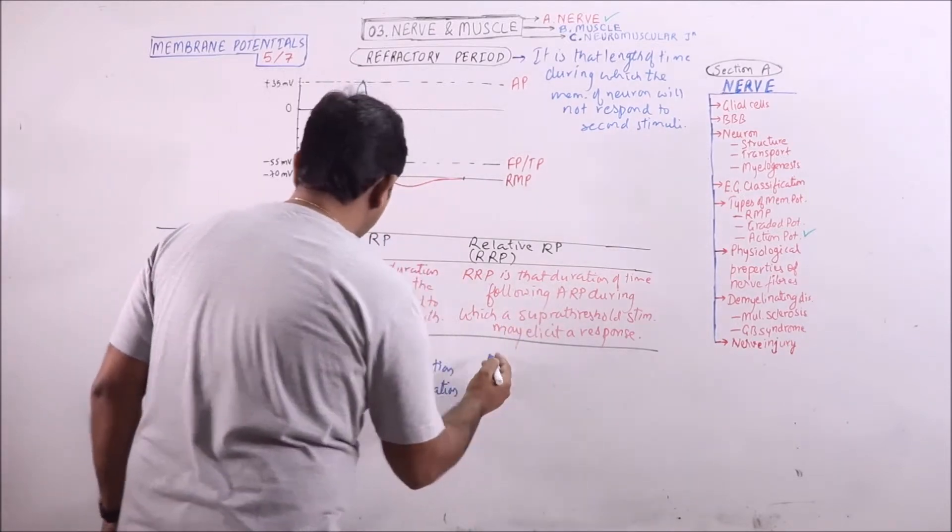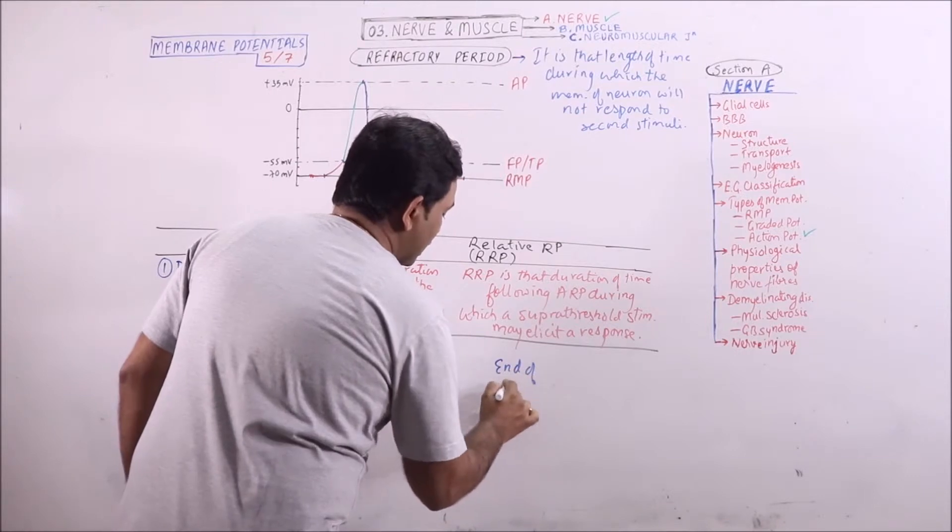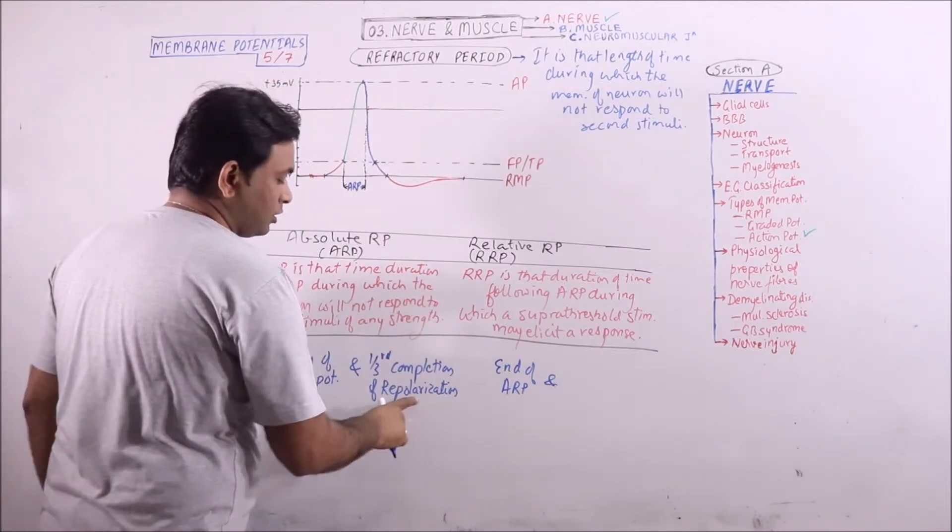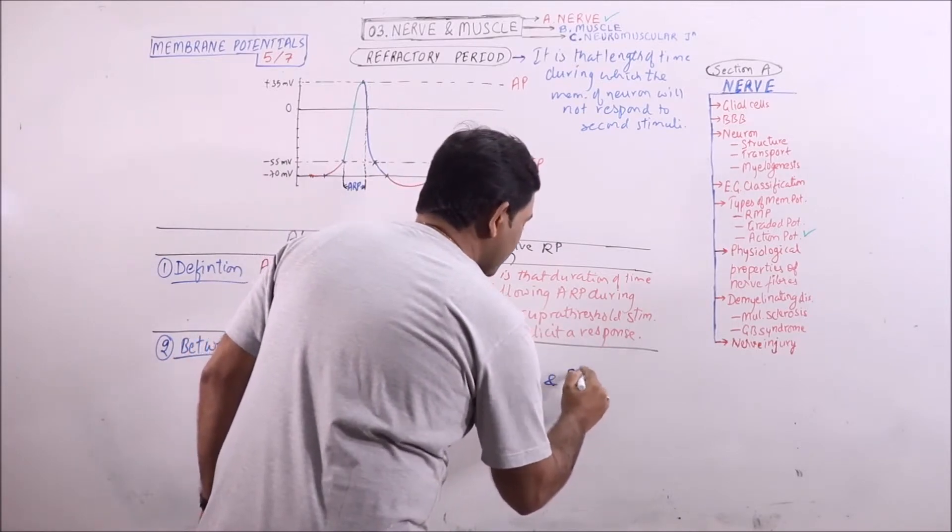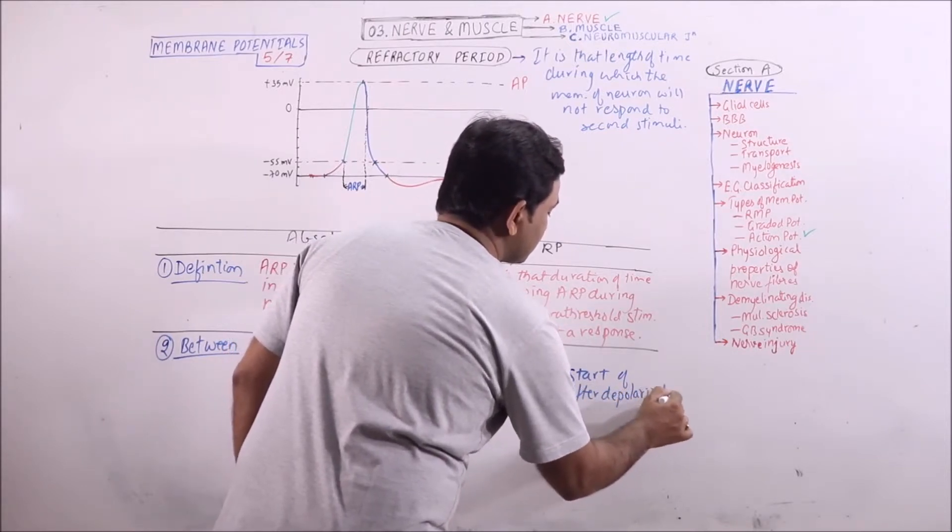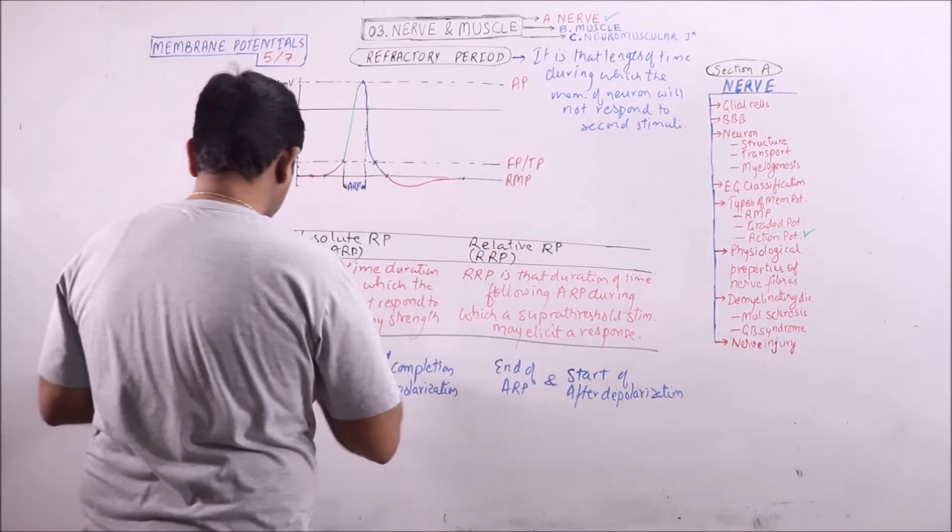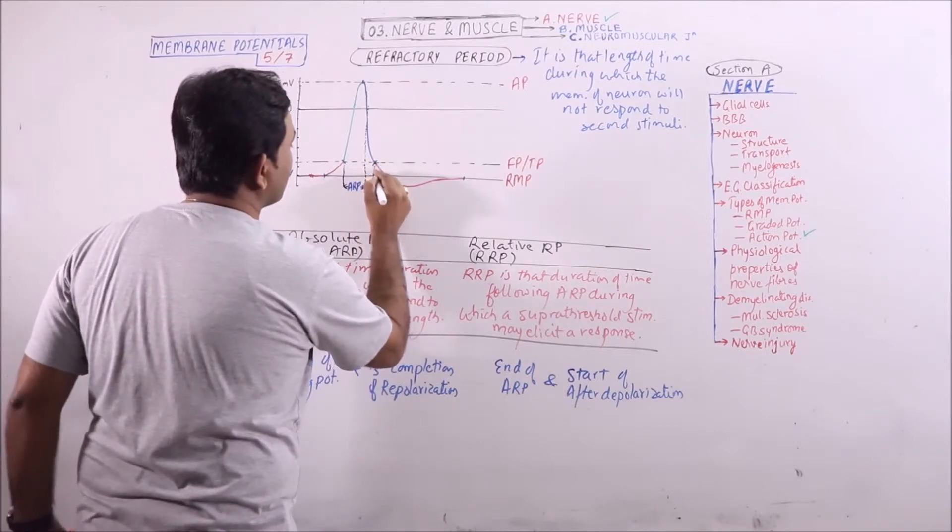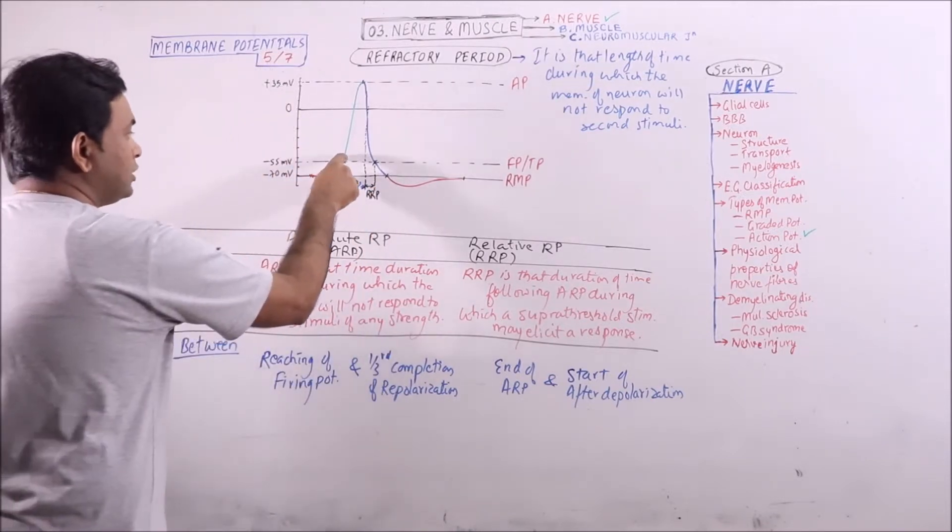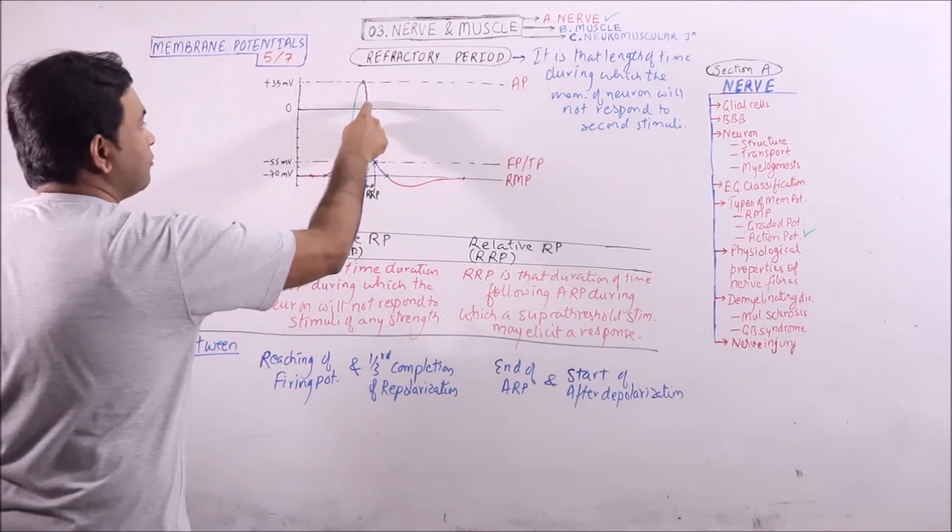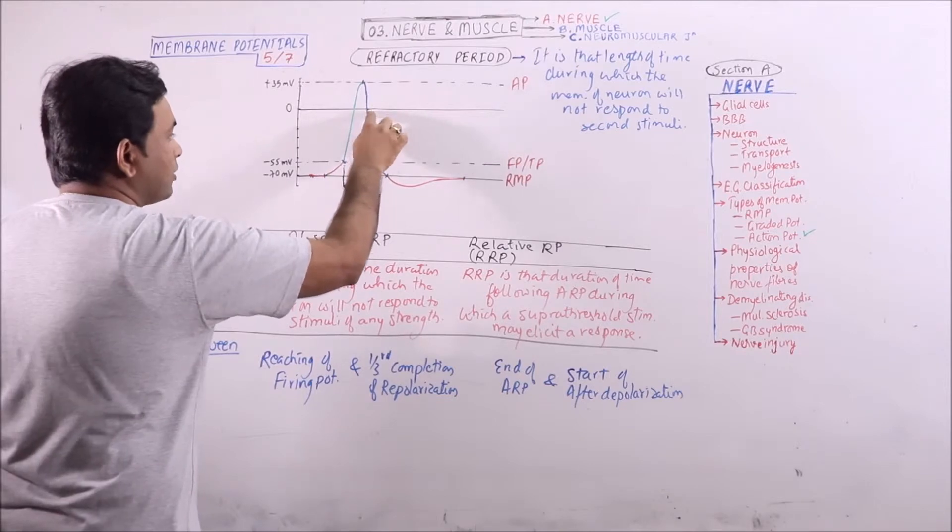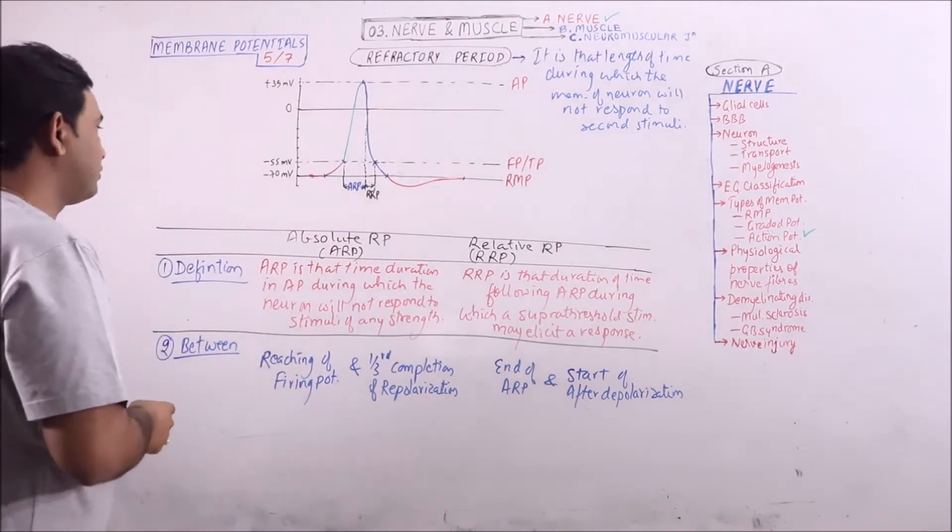While the relative refractory period starts with the end of absolute refractory period, that is one-third completion of repolarization, and the start of after depolarization. So reaching of firing level, depolarization, then one-third completion of repolarization, in between these two points there is absolute refractory period. And the end of ARP and the start of after depolarization indicates the relative refractory period in the action potential.